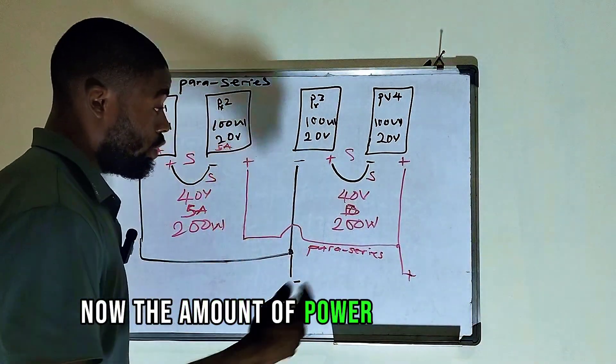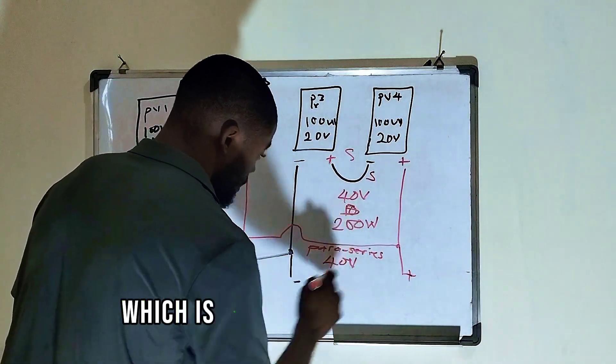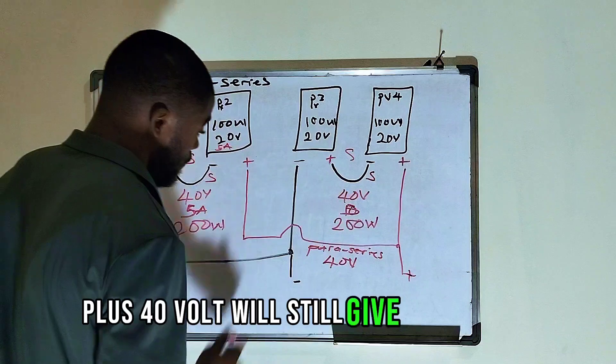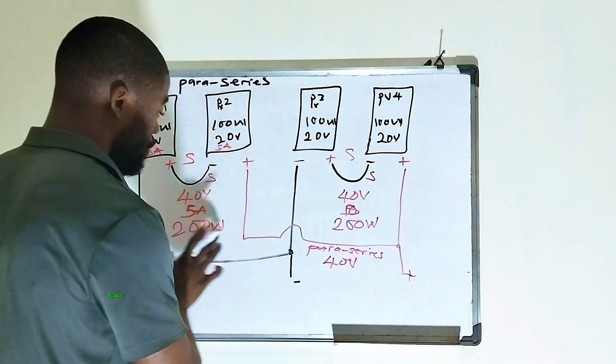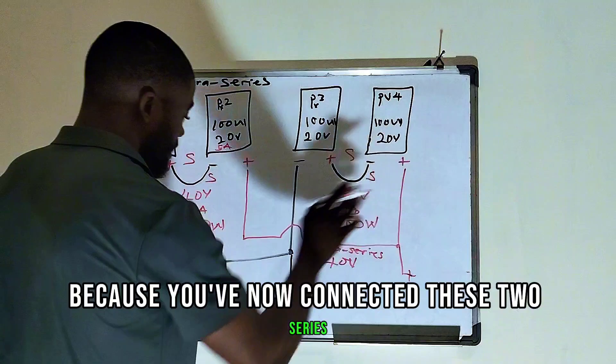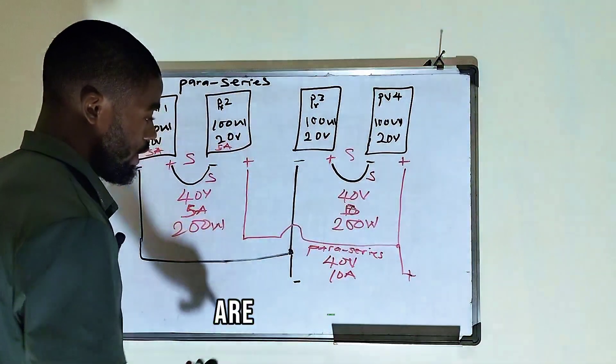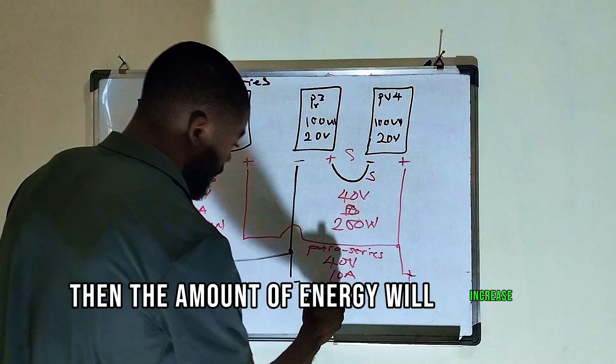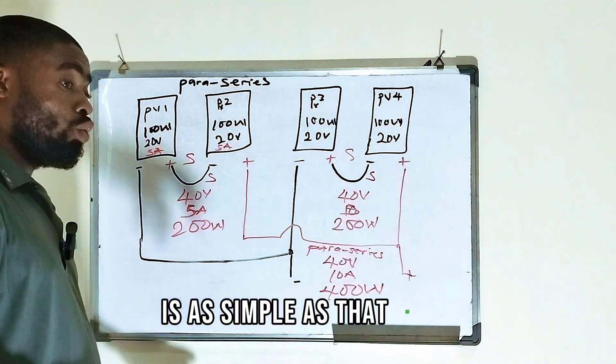Now the amount of power will increase. The amount of voltage still remains the same, which is 40 volt, because 40 volt plus 40 volt will still give you 40 volt. The amount of current will now increase because you've now connected these two series in parallel. You'll now have 10 amps. Are we together? Then the amount of energy will increase to 400 watts. It's as simple as that.